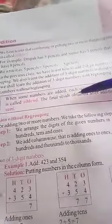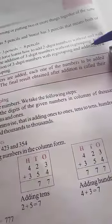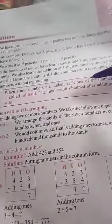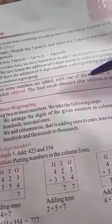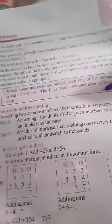When some numbers are added, each one of the numbers to be added is called addend. The final result of the addends after addition is called sum.